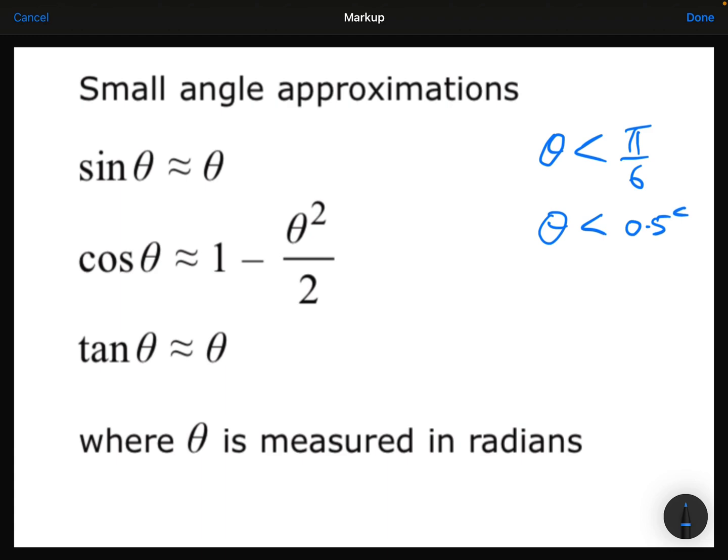So what that means is if the angle, let's say if θ was 0.3, I would consider that to be a small angle because it's less than π over 6. So because that's considered a small angle, instead of me having to type into my calculator sin 0.3, I could just approximate that to be 0.3.